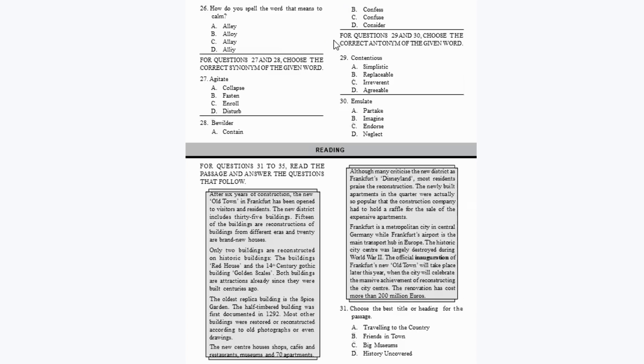The second section is about reading the given passages. You will be given two passages, read them carefully and answer the questions that follow — each question carries one mark. The third section, Spoken and Written Expression, gives you some conversations that you have to complete using suitable options, and each question carries one mark.